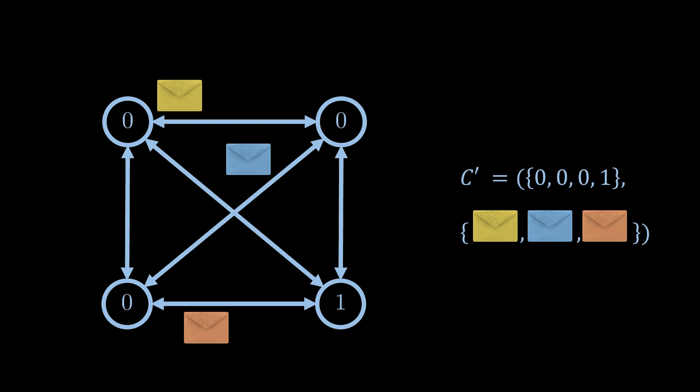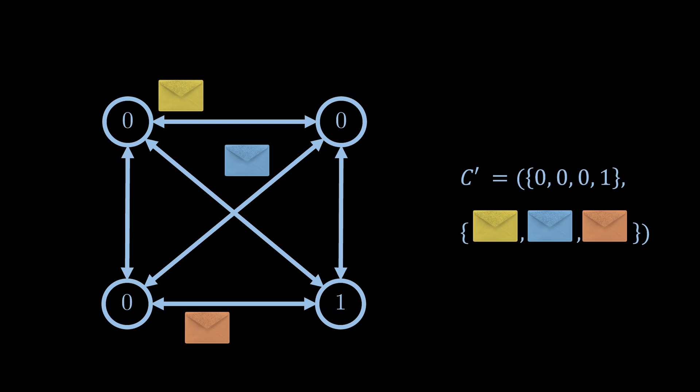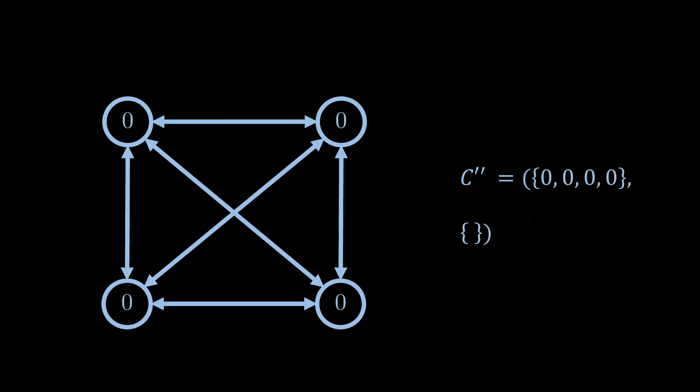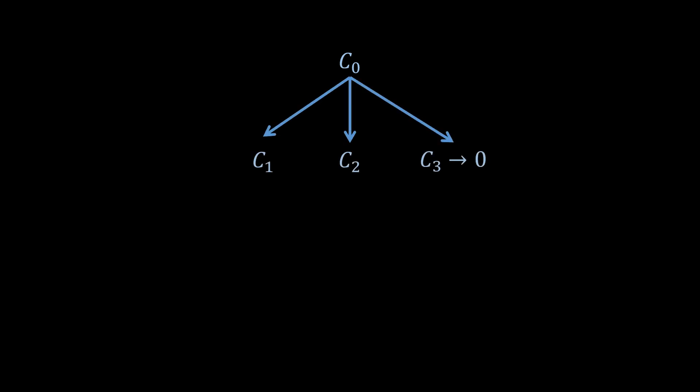New messages may be added if the receiving node sends messages after processing the received message. In this example, as soon as the remaining messages are received, the local states are all updated to zero and there are no messages left. This execution is successful in that termination was reached and all nodes agree on the same bit. We can display the transition from configuration to configuration with a tree, where each child configuration is the result of a particular message that is received and processed next. In the example here, there are three messages in transit in configuration C0, so C0 has three child configurations. If the third message arrives next, the algorithm terminates with the decision value zero.